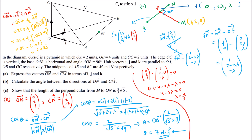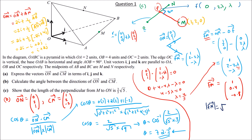Our objective is to find the length of FM. Substituting λ = 4/5 into FM = (1, 2−2λ, −λ): FM = (1, 2 − 8/5, −4/5) = (1, 2/5, −4/5), which is approximately (1, 0.4, −0.8). The magnitude |FM| = √(1² + 0.4² + 0.8²) = √(9/5).